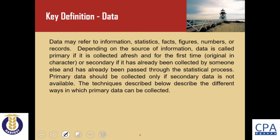Data refers to information, statistics, facts, figures, numbers, or records. Depending on the source of information, data may be primary — that is, if it is collected afresh and for the very first time, meaning the data is original in character. Data is secondary if it has already been collected by someone else and has already been passed through the statistical process.